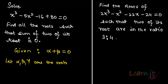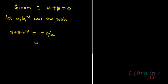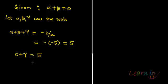So the sum of two roots is 0. The condition for a cubic equation is that α + β + γ = -b/a. Here a = 1, so this becomes -(-5) = 5. Since the sum α + β + γ = 5 and α + β = 0, we get γ = 5.